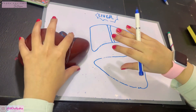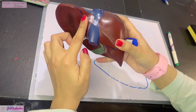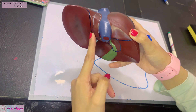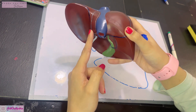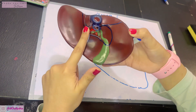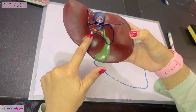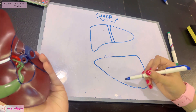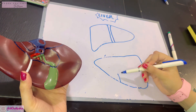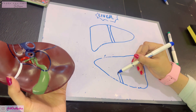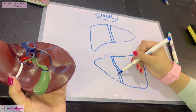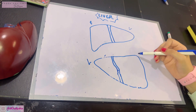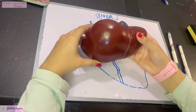Anteriorly and superiorly, the falciform ligament fissure divides the liver into two lobes. Posteriorly, there are two additional fissures that further divide the liver: the fissure for the ligamentum venosum — a remnant of the ductus venosus — and inferiorly the fissure for the ligamentum teres, or round ligament of the liver. The ligamentum teres fissure runs inferiorly and continues upward to become the fissure for the ligamentum venosum, creating the division between the left and right lobes.